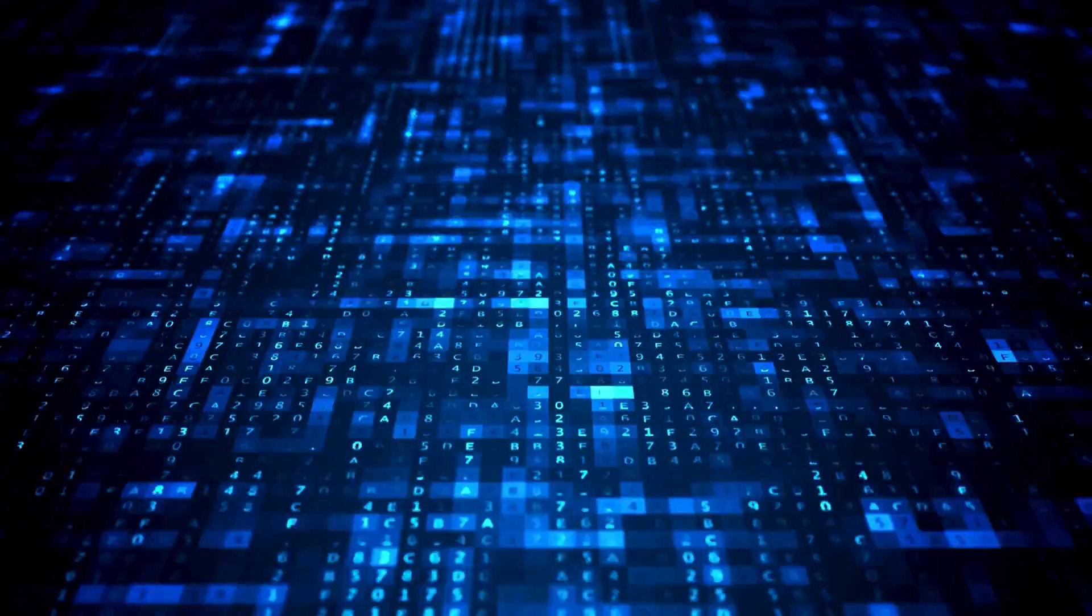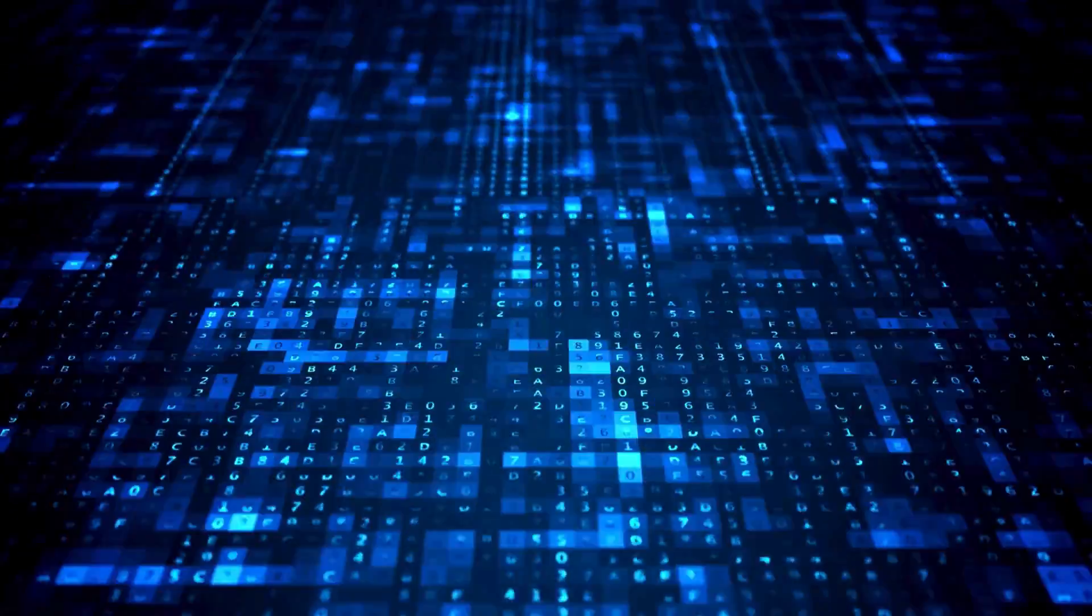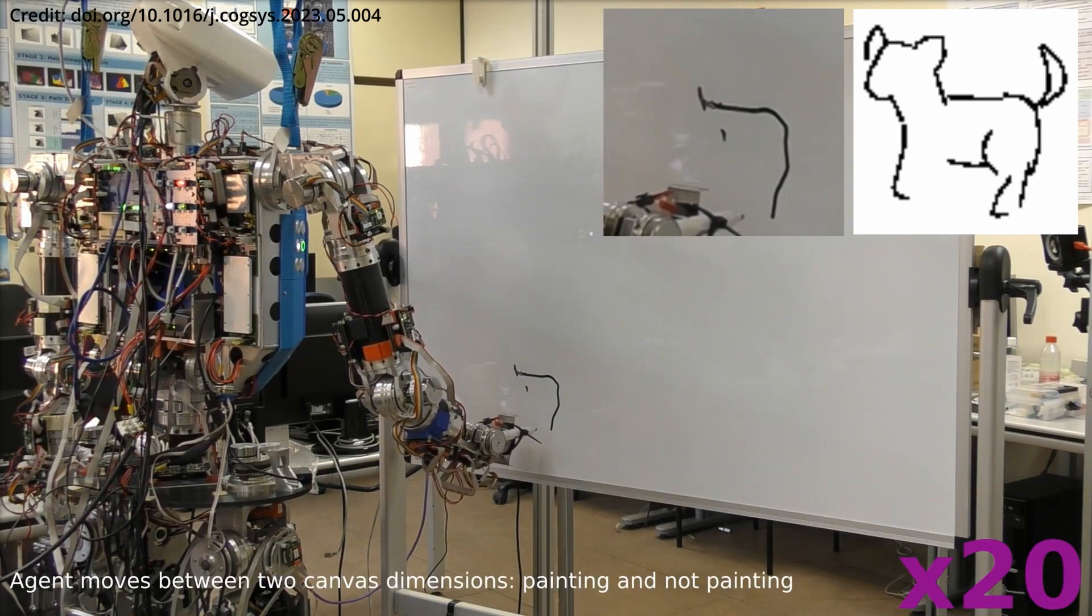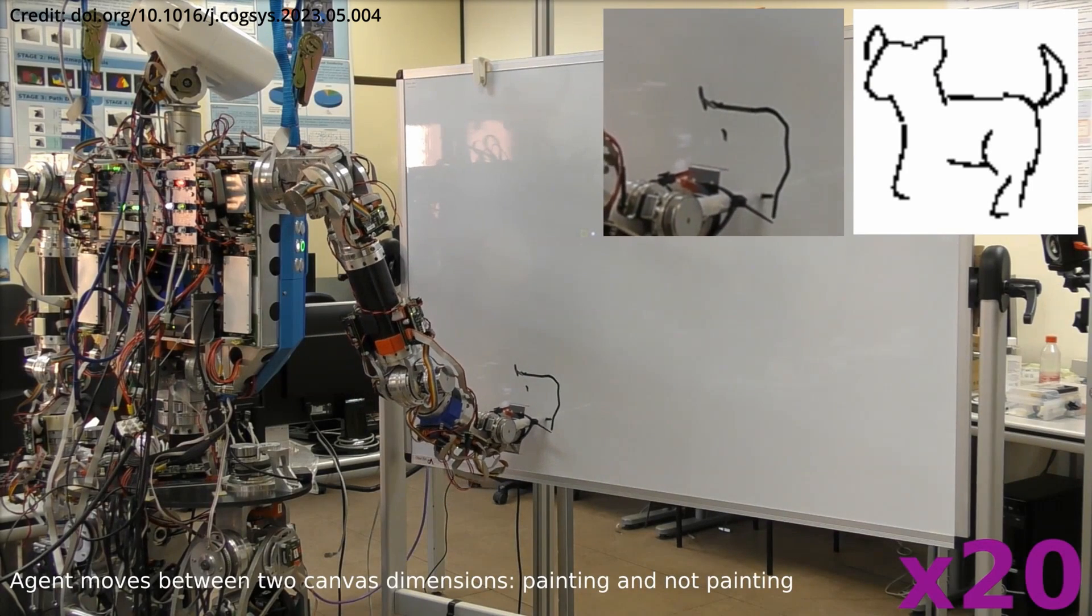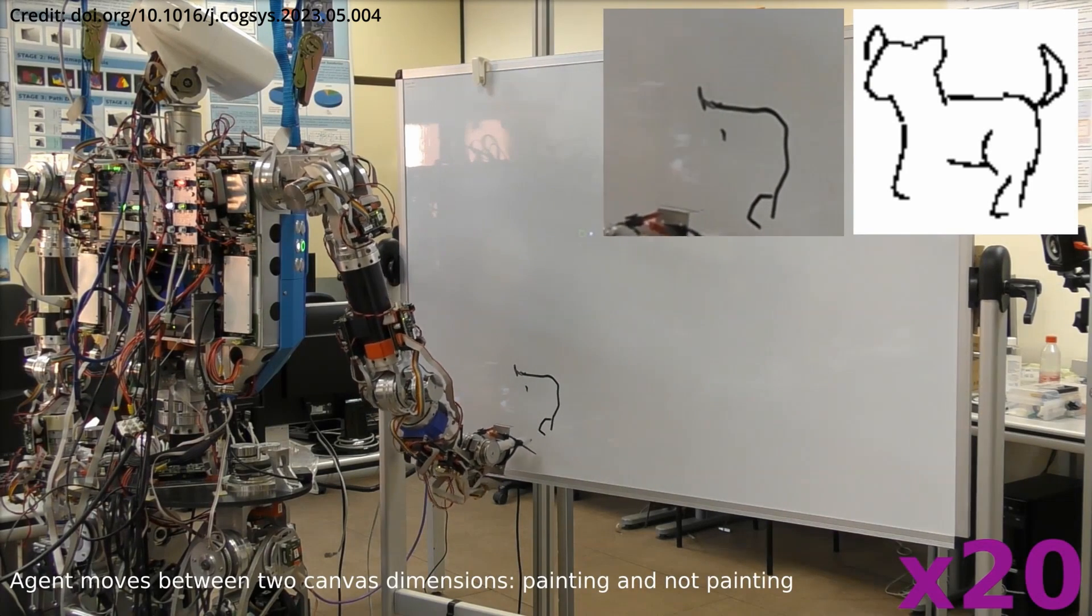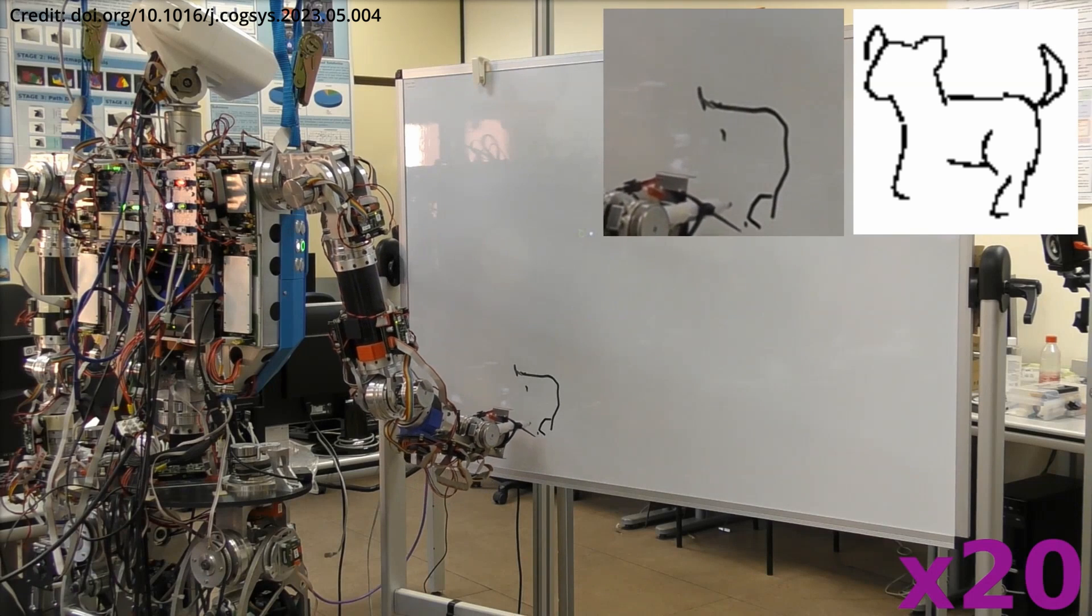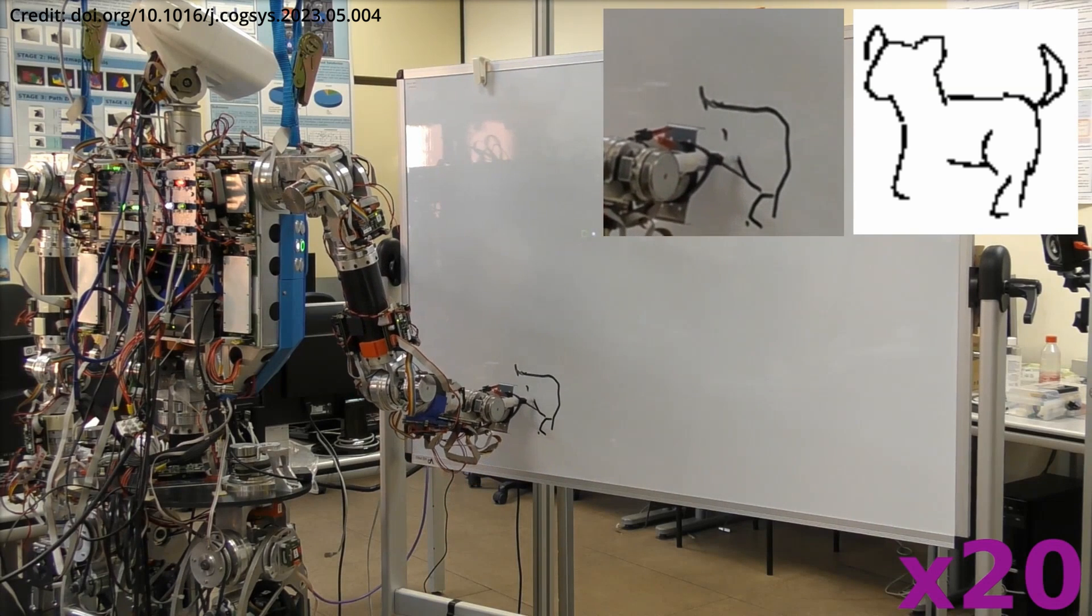Traditionally, AI-generated art has been the domain of digital algorithms, but the team sought to transcend this by enabling a robot to engage directly in the act of creation. Through a deep reinforcement learning model, the robot learns to produce sketches stroke by stroke, resembling the way humans create art.